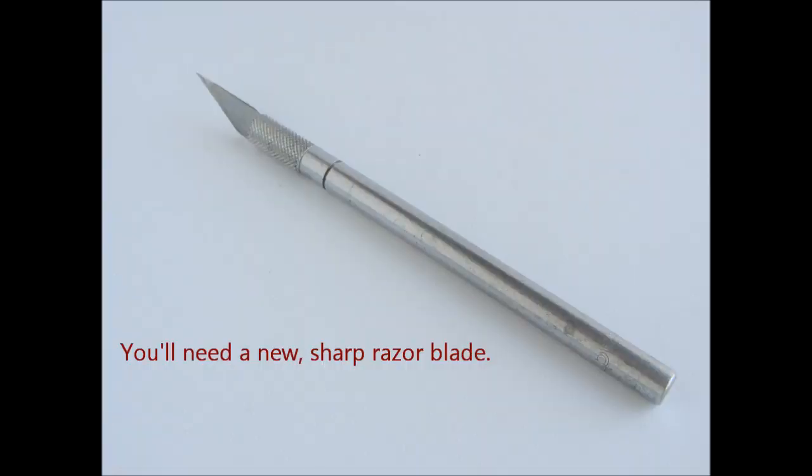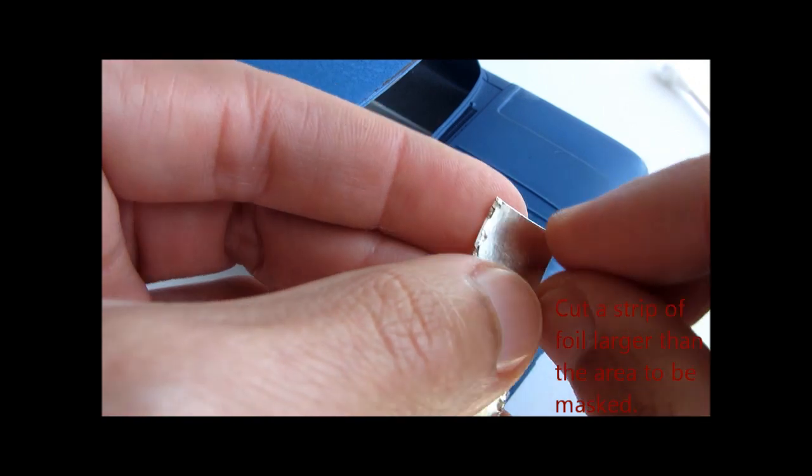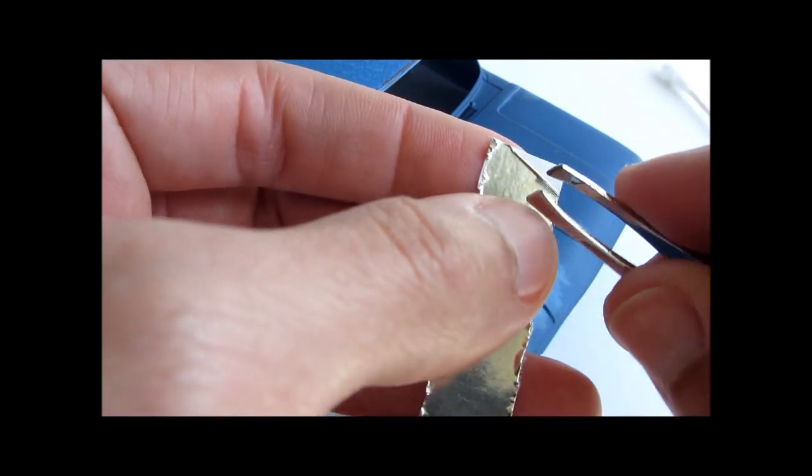You'll need a new sharp razor blade for this. First, take a strip of the foil cut with scissors. It needs to be larger than the area you're masking.